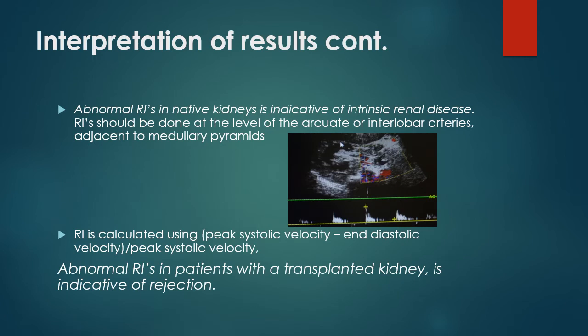Continuing interpretation of results: an abnormal RI in native kidneys is indicative of intrinsic renal disease. Renal RI should be obtained at the level of the arcuate or interlobar arteries. RI is calculated using the peak systolic velocity minus the end diastolic velocity, divided by the peak systolic velocity. An abnormal RI in patients with a transplanted kidney is indicative of rejection.